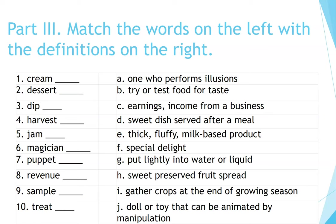Try or test food for taste. Earnings — income from a business. Sweet dish served after a meal. Thick, fluffy, milk-based product. Special delight. Put lightly into water or liquid. Sweet preserved fruit spread. Gather crops at the end of growing season. Doll or toy that can be animated by manipulation.